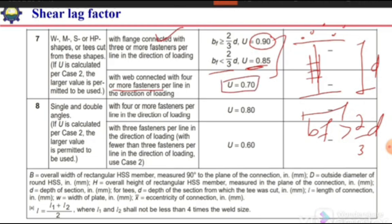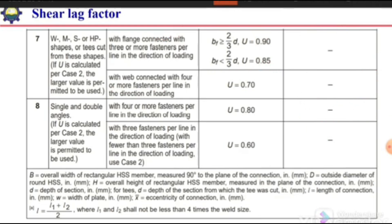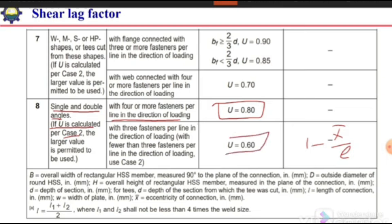For single or double angle sections, we can use Case 2 with the formula 1 minus x-bar over L. Alternatively, with four or more fasteners per line in the direction of loading, we can use U equal to 0.8. With three fasteners per line, we use U equal to 0.6. Otherwise, we use Case 2 to calculate the exact shear lag factor.